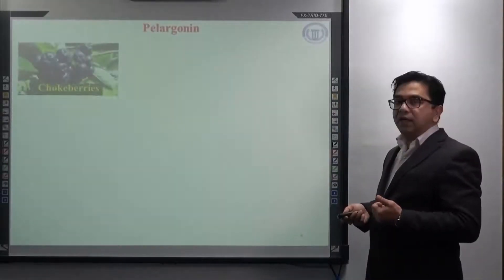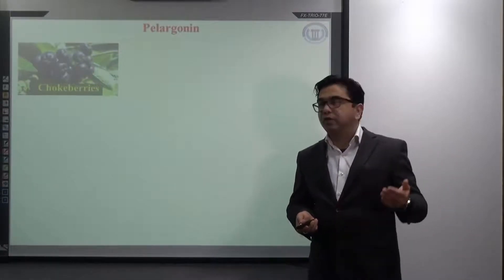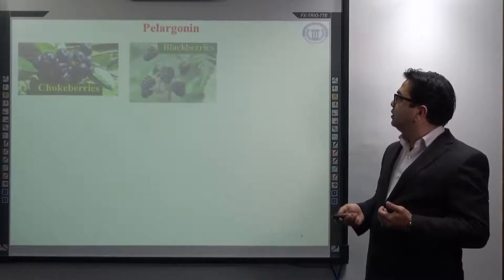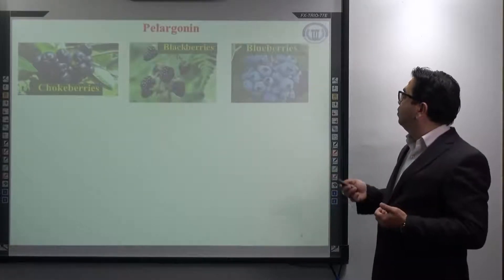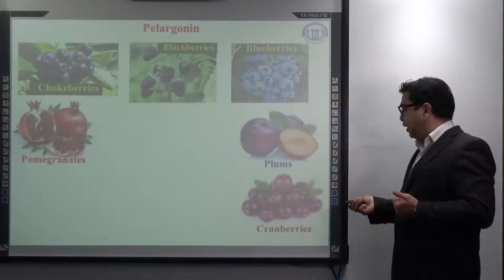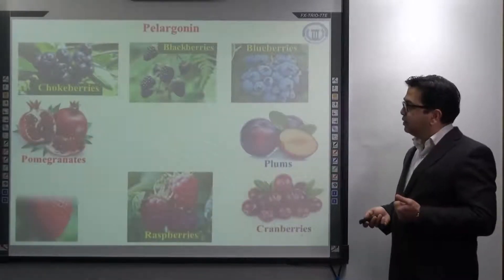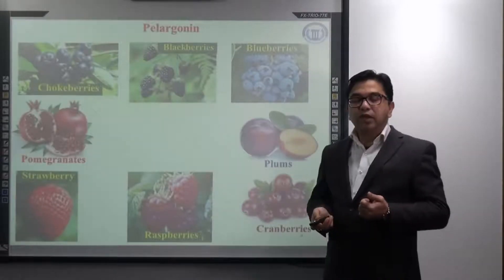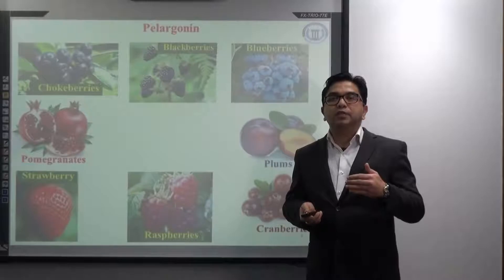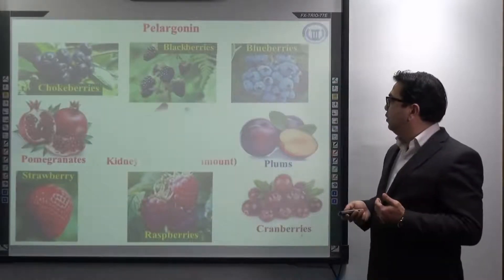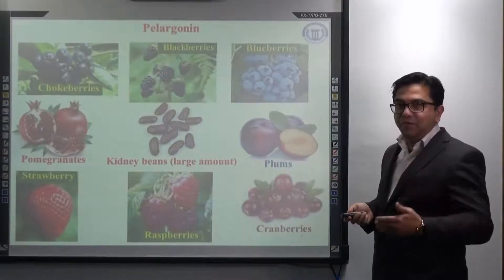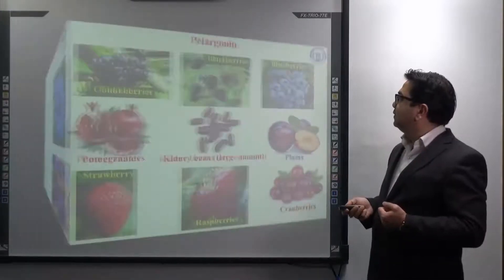Talking about the major sources of pelargonidin and pelargonin, it is mainly found in chokeberries, blackberries, blueberries, pomegranates, palm, cranberries, raspberries, strawberries and as compared to all of them it is present in high quantity mainly in kidney beans. I hope all of you know what is kidney beans. All of you are consuming it a lot. It is good for health.